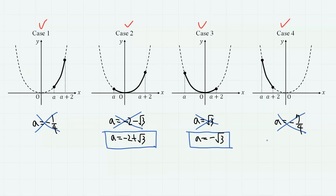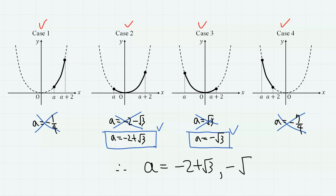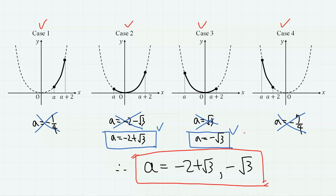We can summarize our results: out of all values of a obtained, only two are valid. Therefore, the answer is a = −2 + √3 or a = −√3. This is our final answer. Thank you for watching. If you like this video, please give it a like and consider subscribing to my channel.